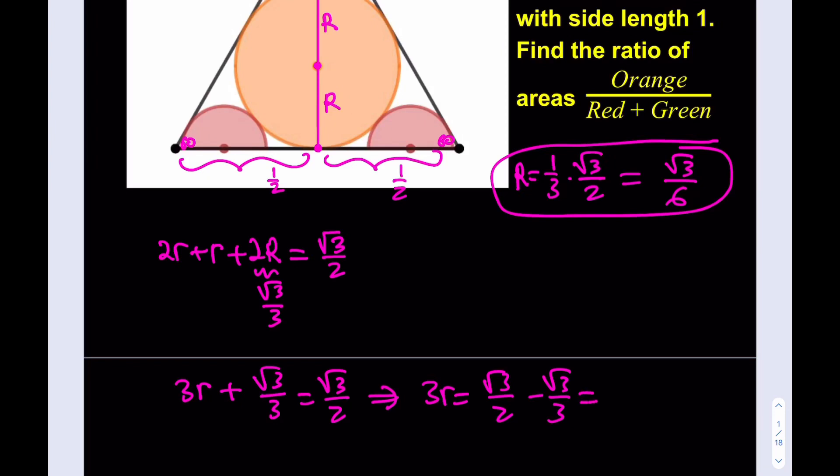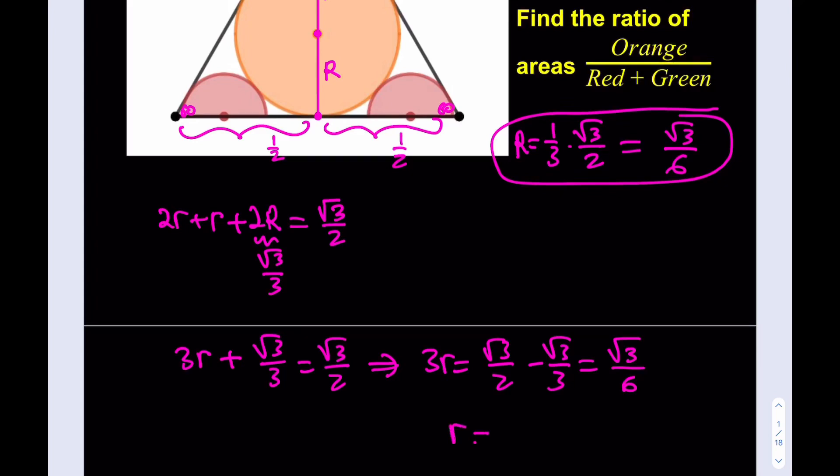If you make a common denominator, you're going to realize that this is going to be root 3 over 6. If you divide both sides by 3, then you'll get the small r to be root 3 over 18. I found the big R, I found the small r. Now is the time to find the radius of the semicircles.